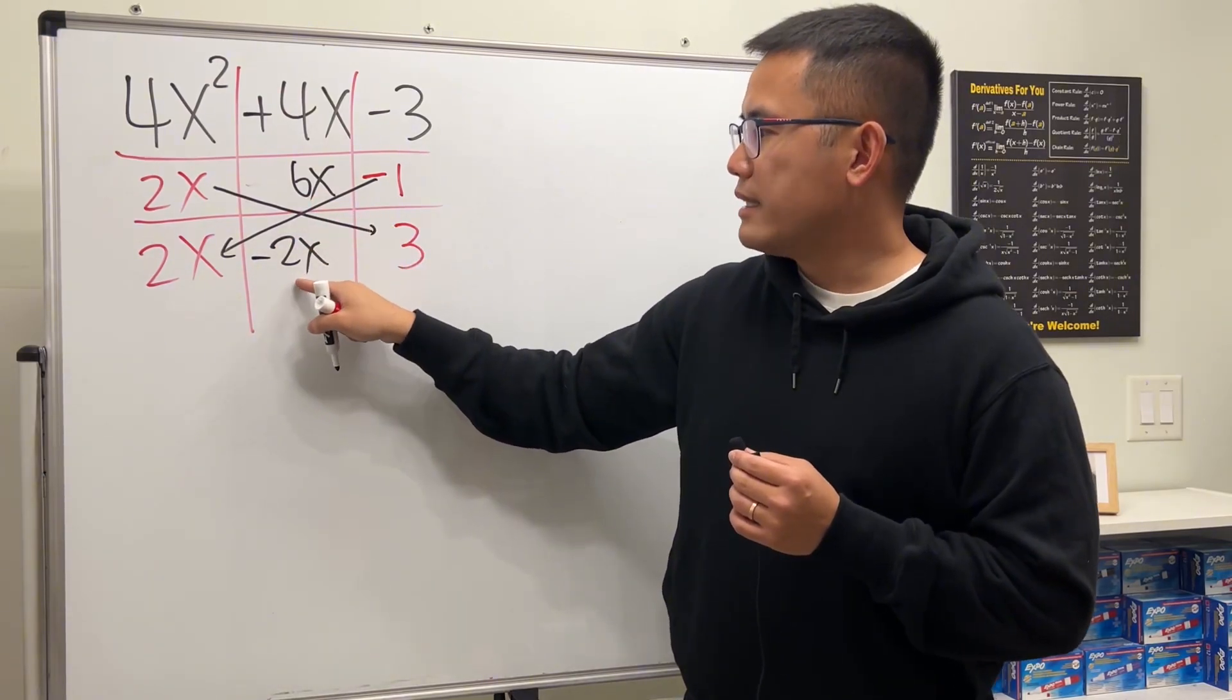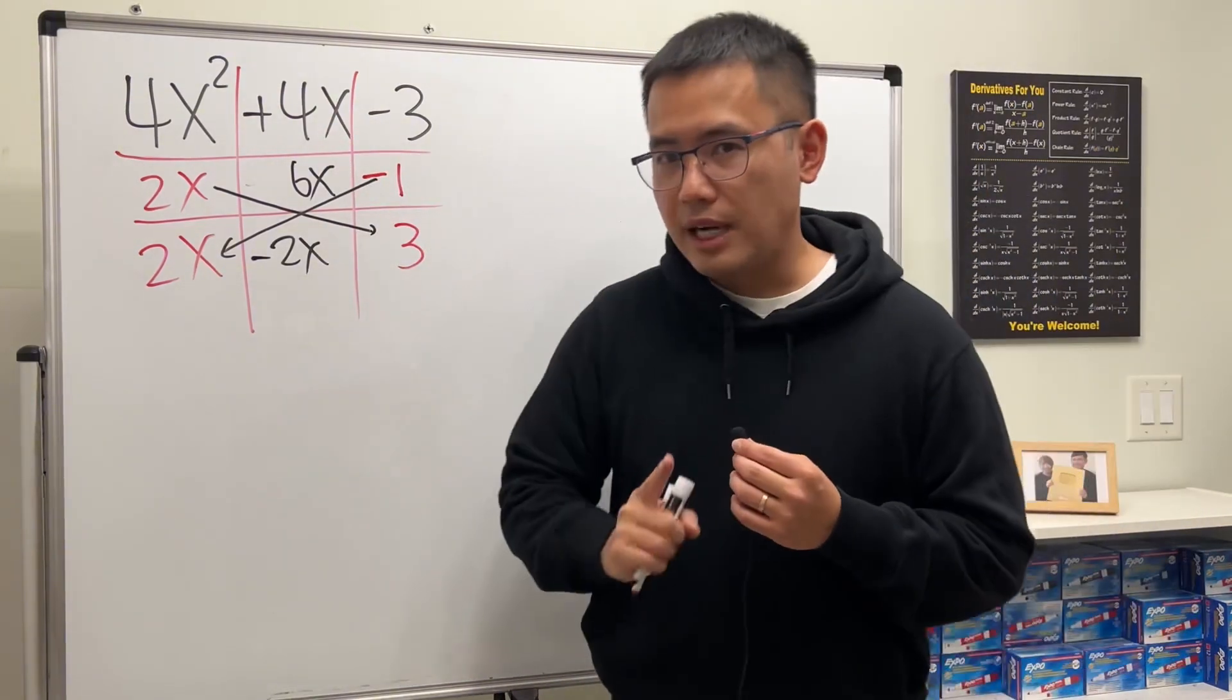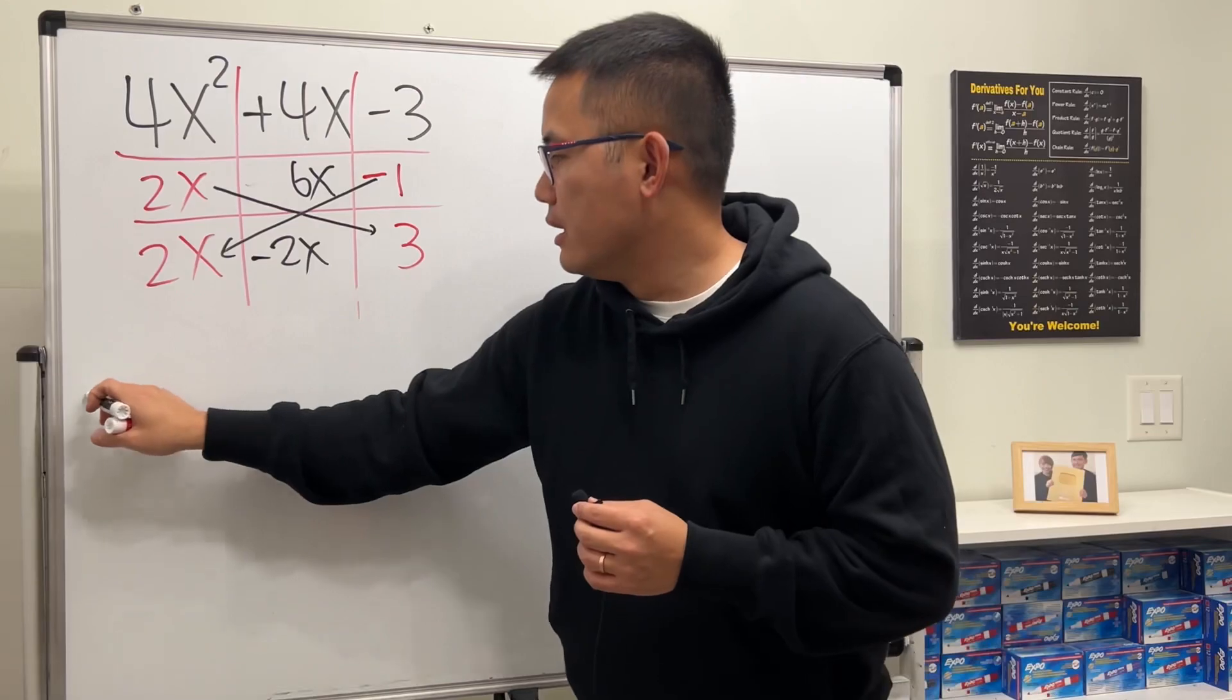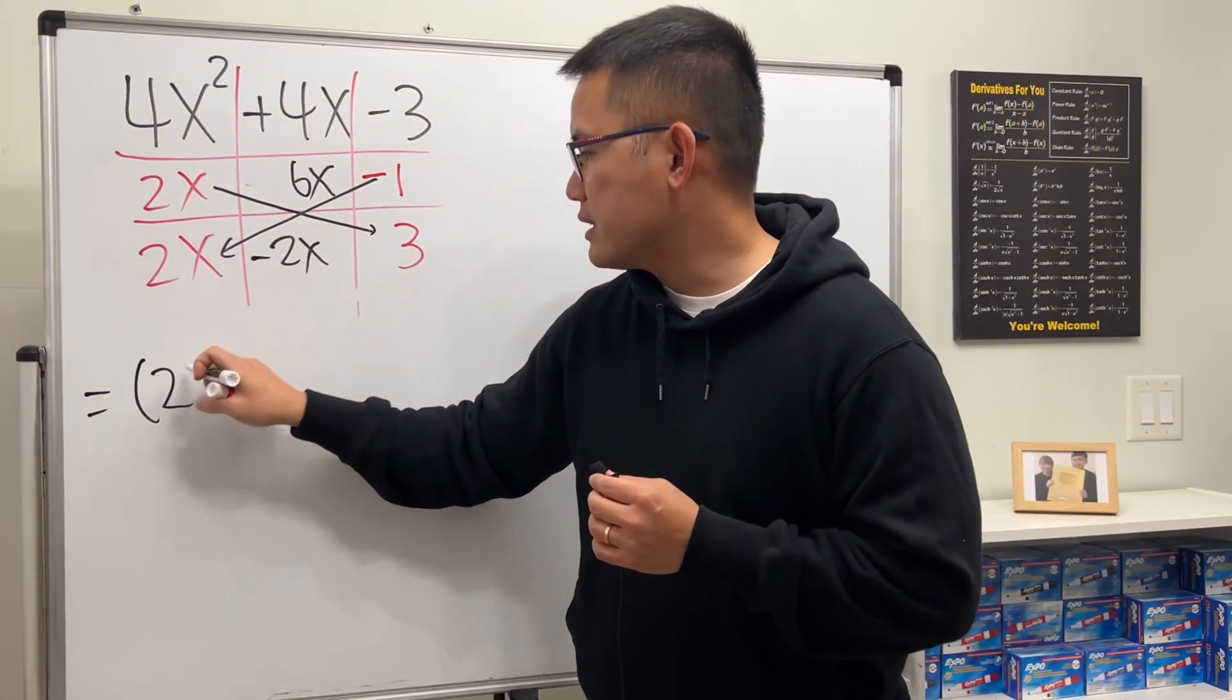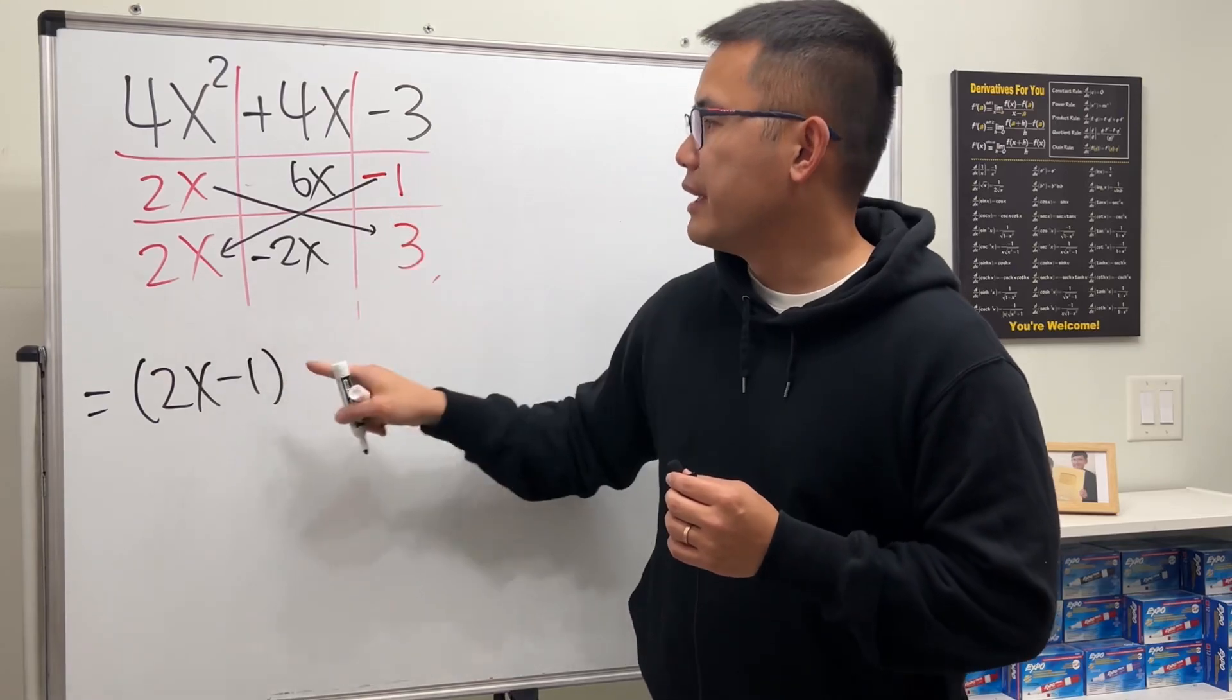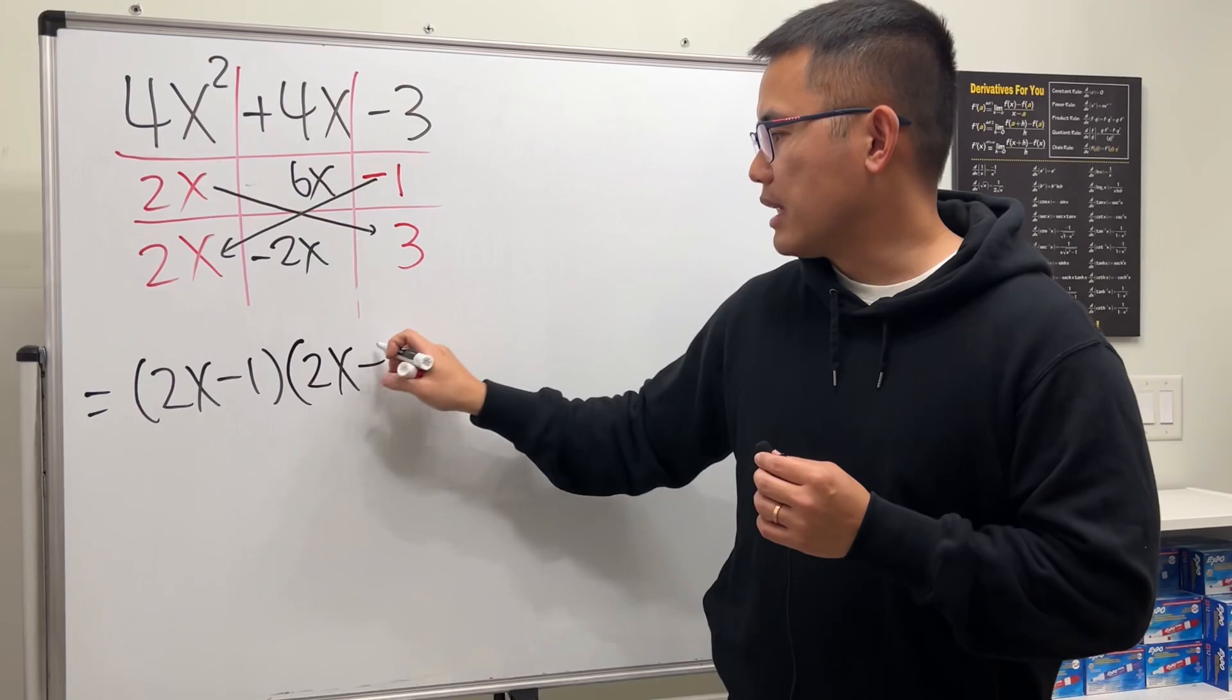6x minus 2x, we do end up with that, so that's it. And this is how you read the answer from here: you go across when you put on the answer. So we have 2x minus 1 times the other factor, 2x plus 3, just like this.